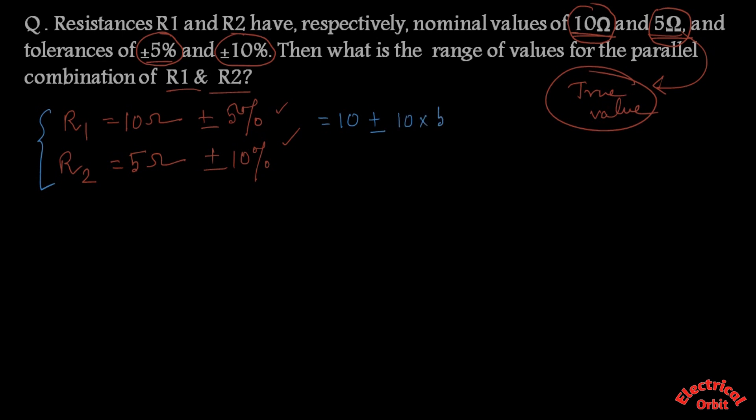...that means 10 plus minus 0.5 ohm, which equals 10.5 or 9.5 ohm, because we are simultaneously adding and subtracting 0.5 ohm from 10 ohm. Similarly we get for R2, 5.5 ohm or 4.5 ohm.